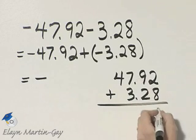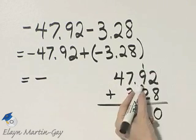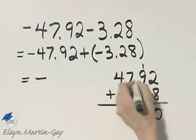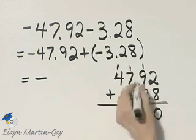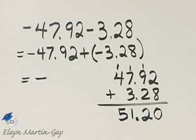8 and 2 is 10, 9 and 1 is 10, plus 2 is 12, that will be 11, 4 and 1 is 5, and write down the decimal point.